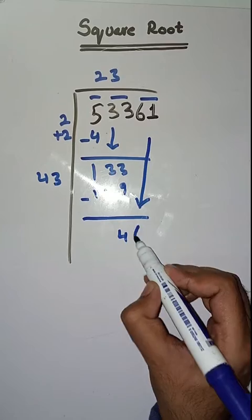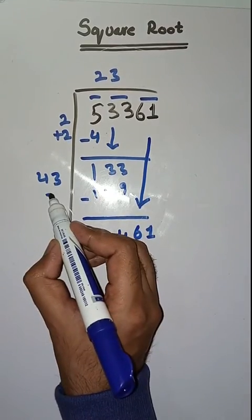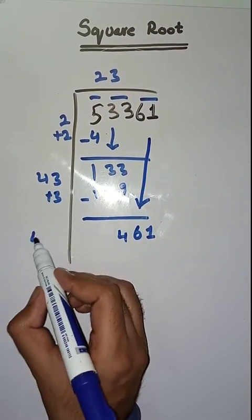Next pair is 61. Bring this down. Here we will do 43 plus 3, which is equal to 46.